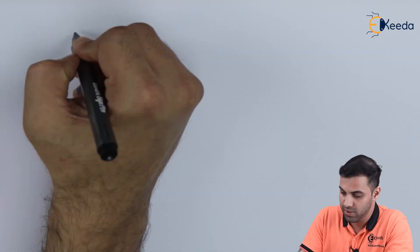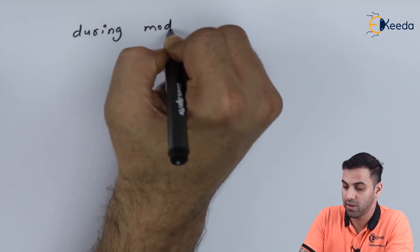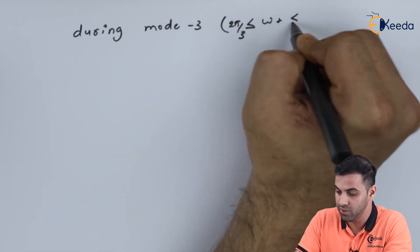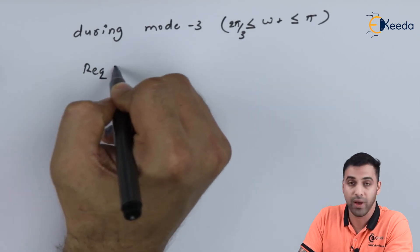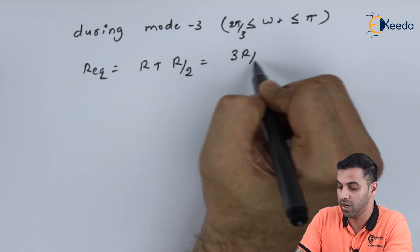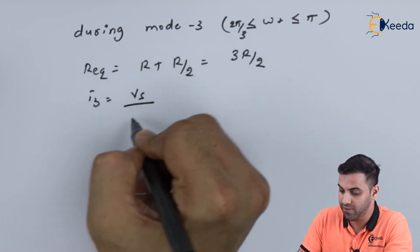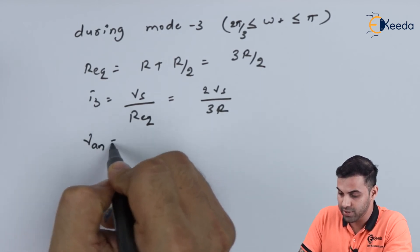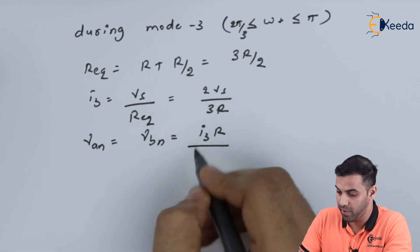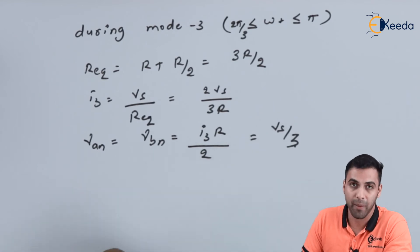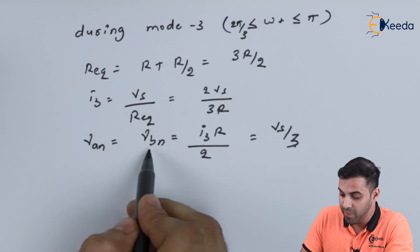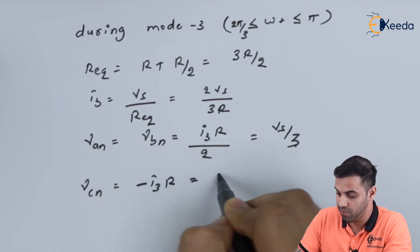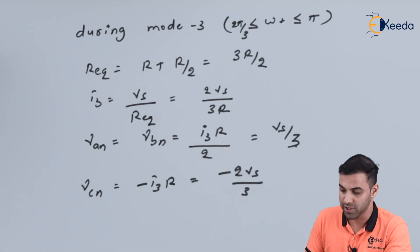During mode 3, which occurs when omega-t lies between 2π/3 and π: R_eq equals R plus R/2, which equals 3R/2. Therefore I3 equals Vs divided by R_eq, which equals 2Vs/(3R). In mode 3: VAn = VBn = I3 × (R/2) = Vs/3, and VCn equals −I3 × R = −2Vs/3. These are the 3 modes of operation of a 3-phase inverter.